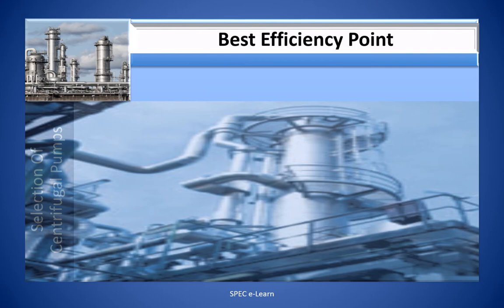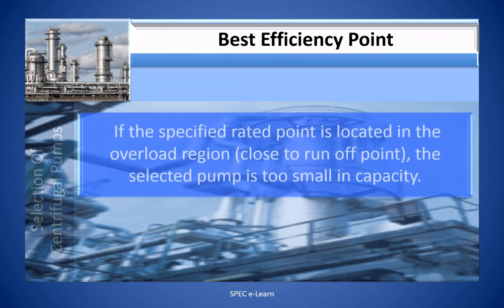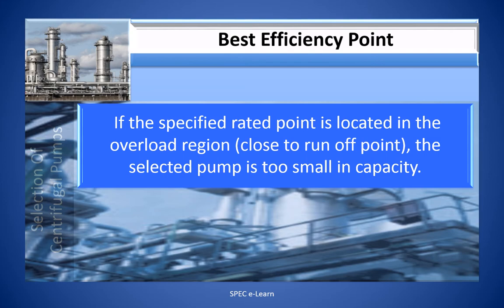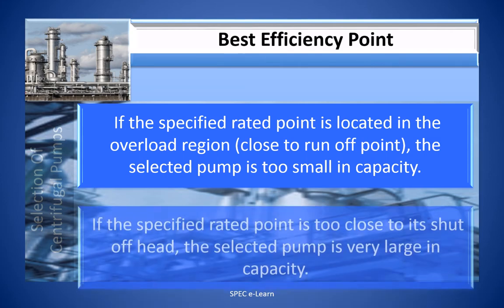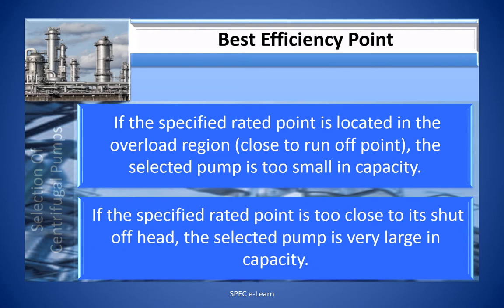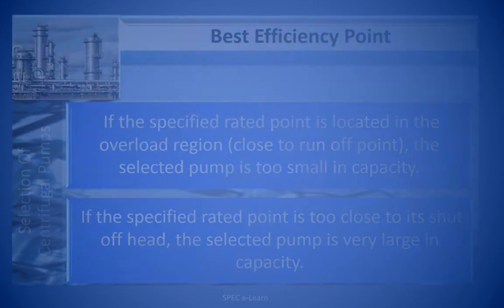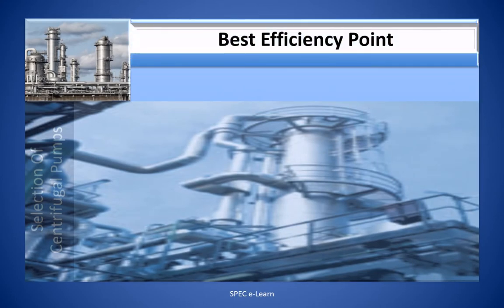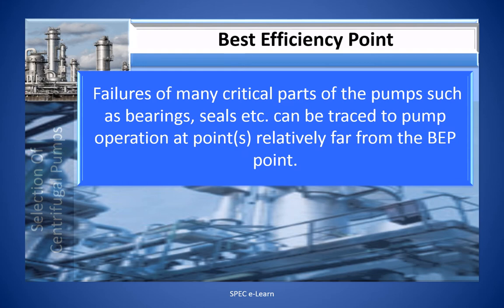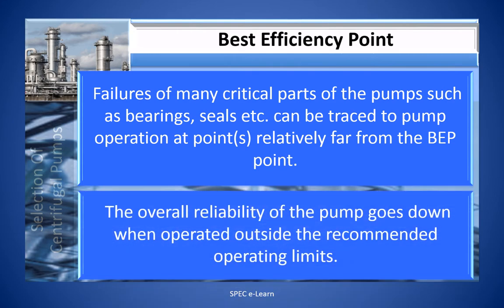If the specified rated point is located close to the runoff point, the selected pump is too small in capacity. If it is too close to the shutoff head, the pump is too large. In either case, the pump selection is poor. A rough rule of thumb is that the rated capacity should not fall below 65 percent of BEP flow, as failures of critical parts such as bearings and seals can be traced to operation far from the BEP, reducing overall reliability.